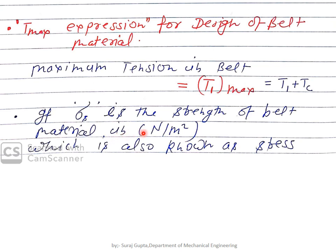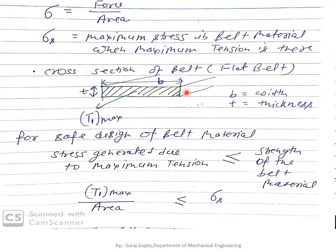If sigma_s is the strength of the belt material, expressed in Newton per meter squared — which you may have studied as stress, defined as force upon area — then the stress generated inside the material equals force applied divided by cross-sectional area. Sigma_s is the maximum stress at which the material will break down, and that value of stress is known as the strength of the material.